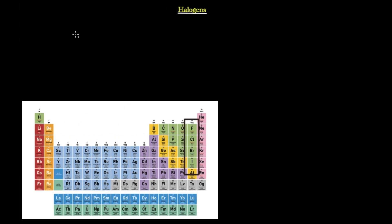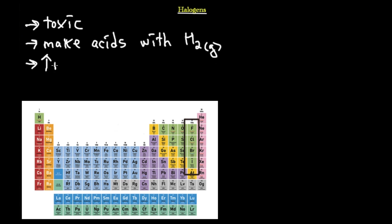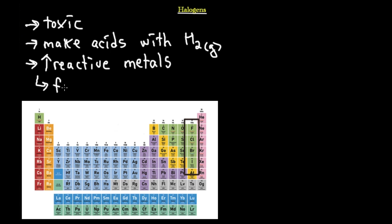Looking at the other side of the staircase, the halogens are in group seven. Halogens — fluorine, chlorine, bromine, and iodine — are typically toxic elements. They make acids with hydrogen gas and are extremely reactive. Chlorine and fluorine are among the most reactive elements on the periodic table, with fluorine being the most reactive. They react very highly with other metals, and this reaction with metals forms salts.